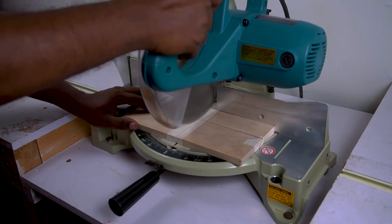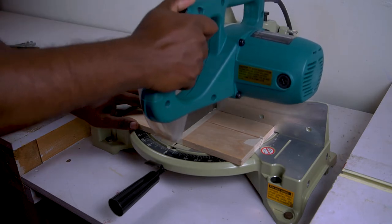Now set the miter saw back to square. Rotate the wood by 90 degrees and place the wood on the bed. Now make a second cut to separate the pieces.